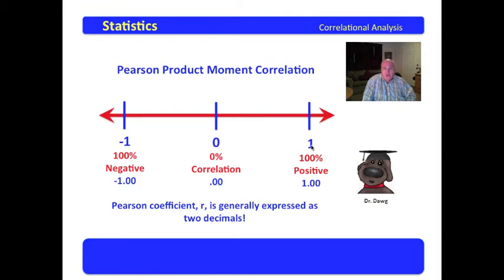You will recall that one is the decimal 1.00, which is 100%. So that one represents 100% positive correlation. Negative one is the decimal negative 1.00, or 100% negative correlation. So a Pearson product moment correlation coefficient will rest between negative one and one, and it is generally expressed as two decimals.